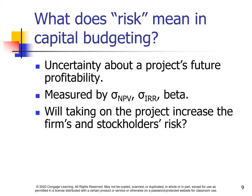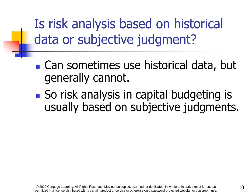What does risk mean in capital budgeting? It means uncertainty about a project's future profitability. It is measured by the standard deviation of net present value, the standard deviation of internal rate of return, and beta. Will taking on the project increase the firm's and stockholders' risk? Is this risk analysis based on historical data or subjective judgment? It can sometimes use historical data, but generally cannot. So risk analysis in capital budgeting is usually based on subjective judgment.